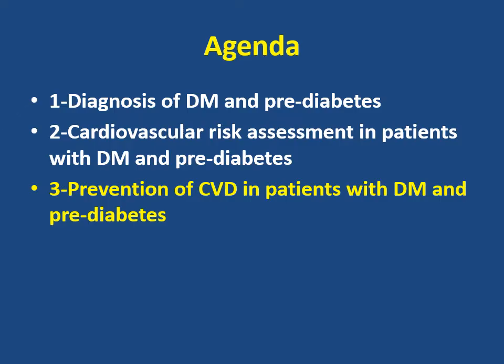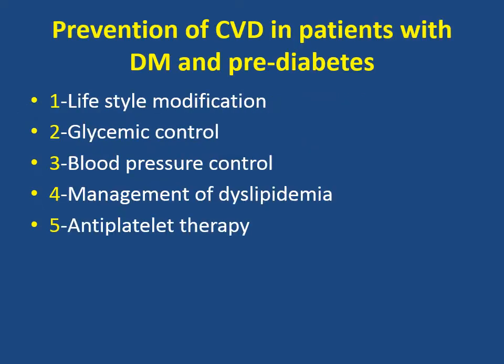The third point is prevention of cardiovascular diseases in patients with diabetes and pre-diabetes. To prevent cardiovascular disease, we should go through five main lines: the first line is lifestyle modification, the second line is glycemic control, the third line is blood pressure control, the fourth line is management of dyslipidemia, and finally anti-platelet therapy.